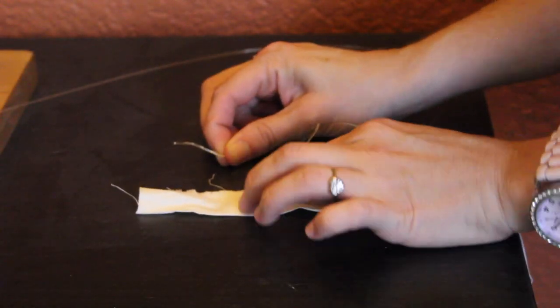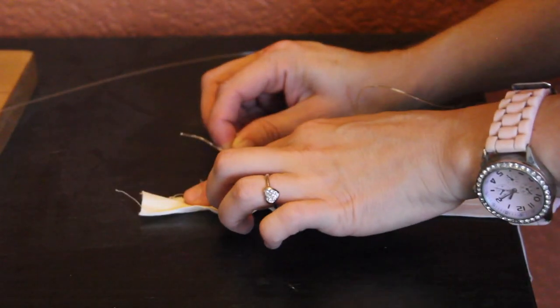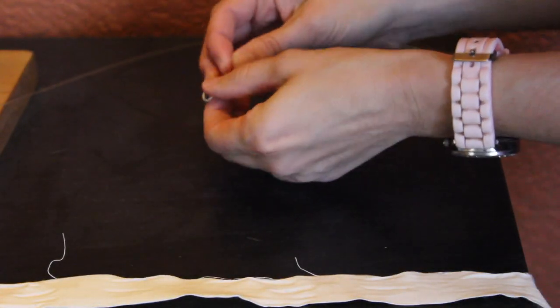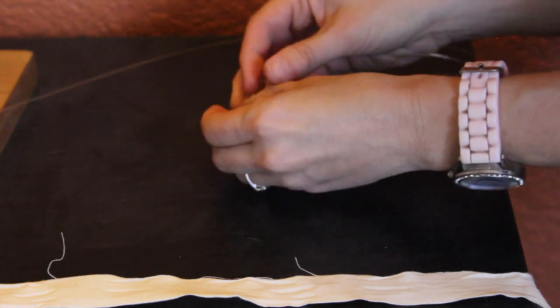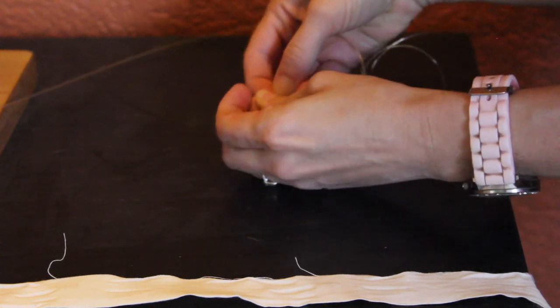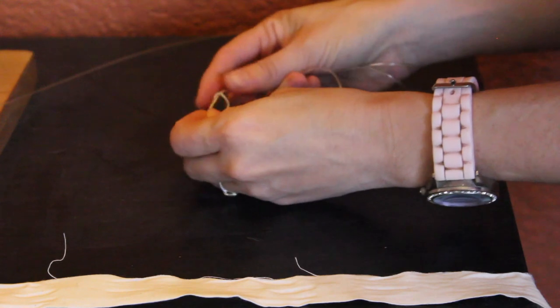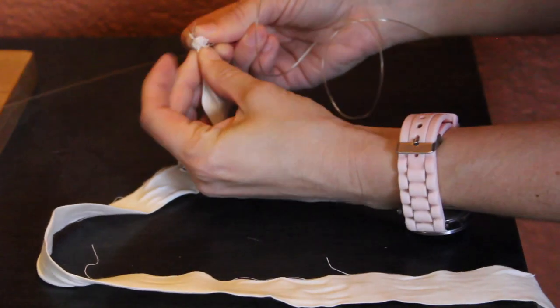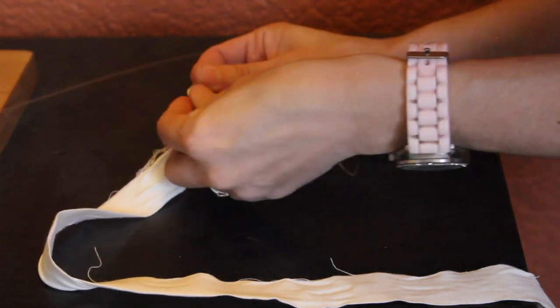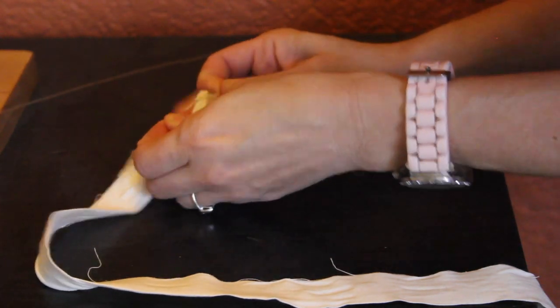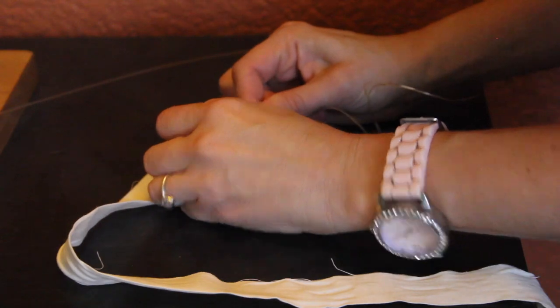The next step is attaching the end of the string to the end of the cloth. What I do is I make a simple knot at the end of the string. Just like that. And then I feed the cloth through it. Just a little of the cloth. And then I pull the string tight.